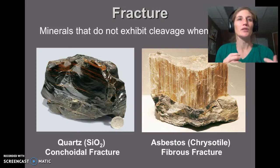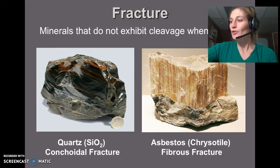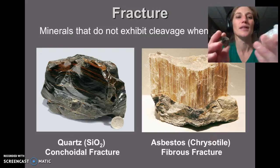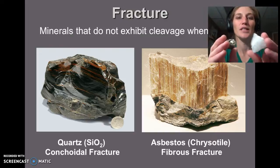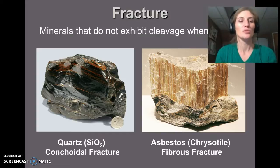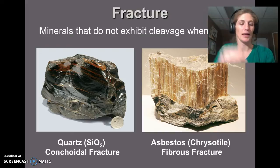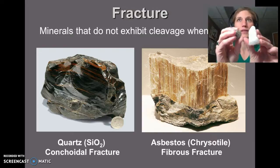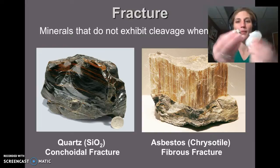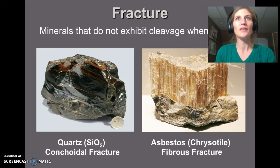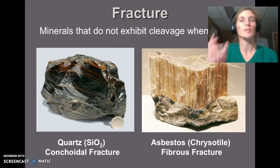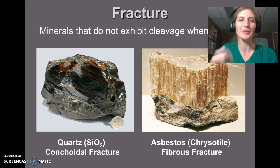Fracture describes how minerals that don't exhibit cleavage break. Two classic examples in your kit are sample 15 and sample 14, both of which show conchoidal fracture — a scalloped, curved break on the surface. Neither has any cleavage; when broken they show that rounded conchoidal surface. Another type is fibrous fracture, seen in chrysotile (a type of asbestos), shown in a picture.